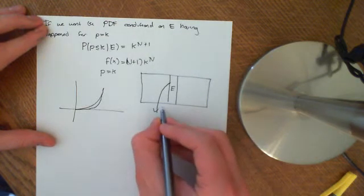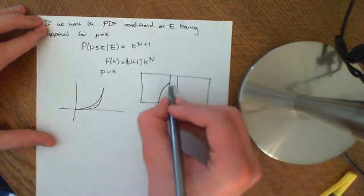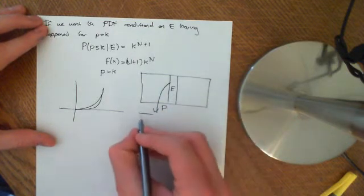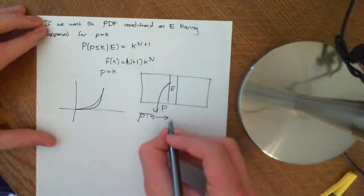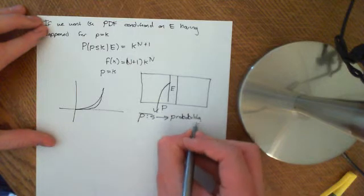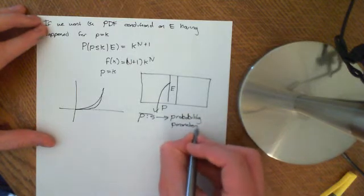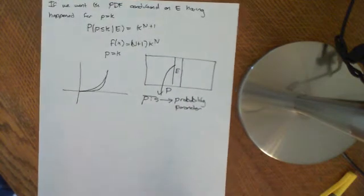define me a random variable, which I'm going to call P this time, which ascribes to each one of these outcomes its probability. So P maps each outcome onto its probability parameter, i.e. what probability it was using to calculate the sun rising, whether the sun is going to rise each day.